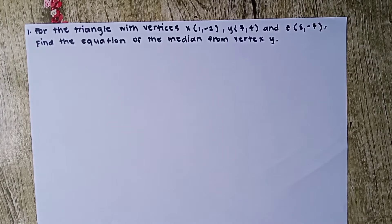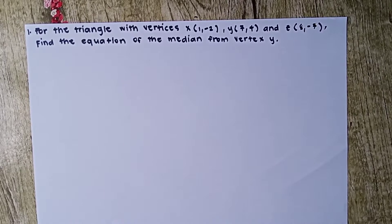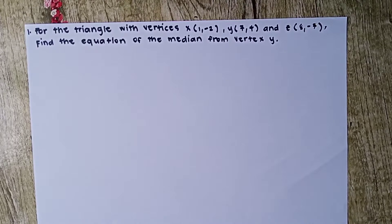Number 1. For the triangle with vertices X(1, -2), Y(7, 4), and Z(8, -7), find the equation of the median from vertex Y. To solve, it is advisable to plot the points first.